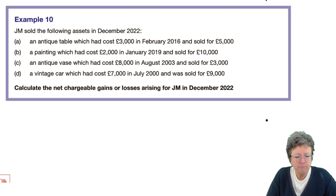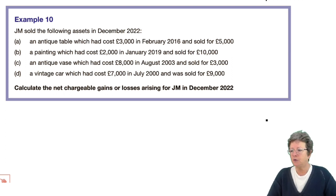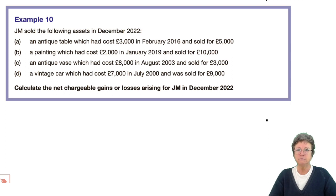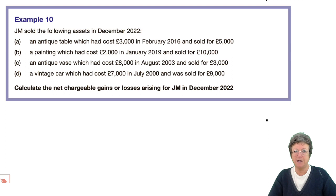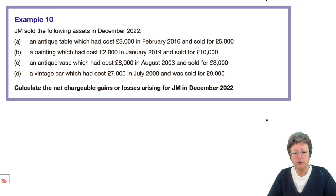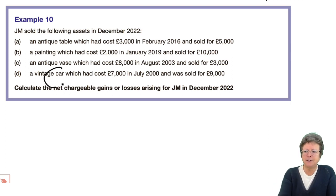JM sold the following assets. An antique table which cost £3,000; in February 2016 he sold it for £5,000 — can you remember which box that goes in? A painting which cost £2,000 and has been sold for £10,000 — which box will that go in? A vase which cost £8,000, sold for £3,000 — that's going to make a loss, so we know which box that one goes in. And a vintage car which cost £7,000. The key word in that question is 'car' — it is exempt.